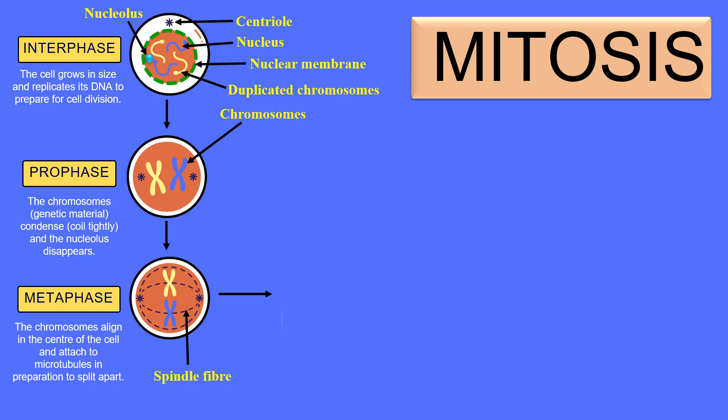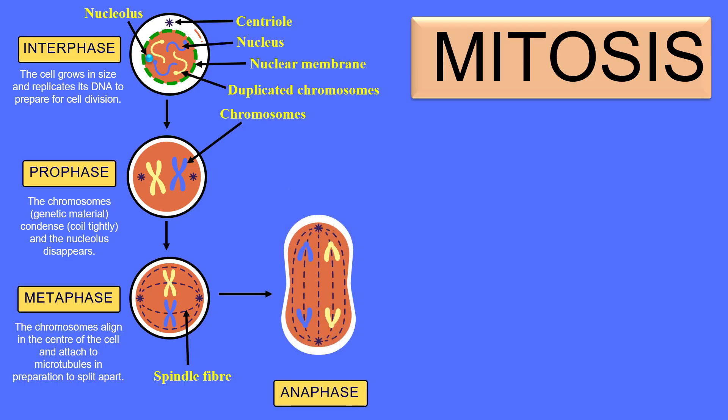In anaphase, the chromosomes are pulled toward the opposite poles of the cell. This pulling force is also due to the spindle fibers, and the chromosomes reach the opposite poles.